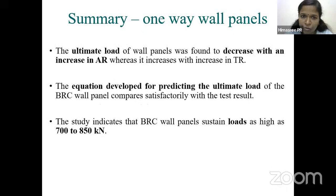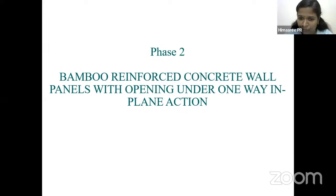Summary of Phase 1 one-way wall panels: ultimate load was found to decrease with increase in aspect ratio. The equation developed for predicting ultimate load compared satisfactorily with test results. The wall panels were able to take around 700 to 850 kN load — approximately 70 to 85 tons.